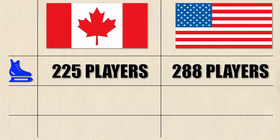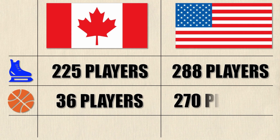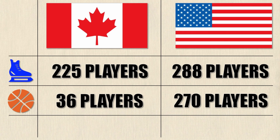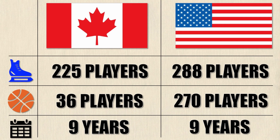Alternatively, instead of making hockey players, or in conjunction with making hockey players, they can also make basketball players. Now Canada can only make 36 players, however the United States can make 270 players. We're assuming that the length of time to make these numbers is nine years for both countries. So how you would read this is that in nine years, Canada can either produce 225 hockey players or 36 basketball players, and in the same nine years, the United States can either produce 288 hockey players or 270 basketball players.